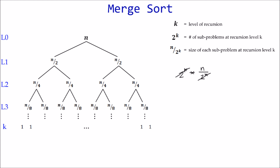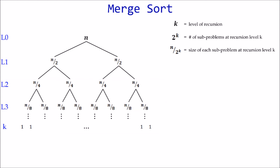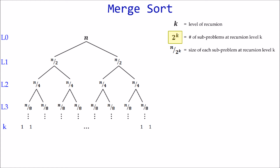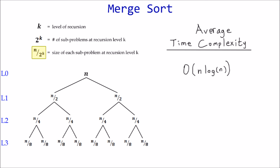So at each level, merge works on all n elements — meaning merge does O(n) work per level. The next step is to determine how many levels of recursion there are. We know there are k levels, but we need to find the value of k in terms of n. We can use the formula for subproblem size: since the size of each subproblem at the bottom level k is one, we set n divided by 2^k equal to one and solve for k. We end up with k equals log n levels.